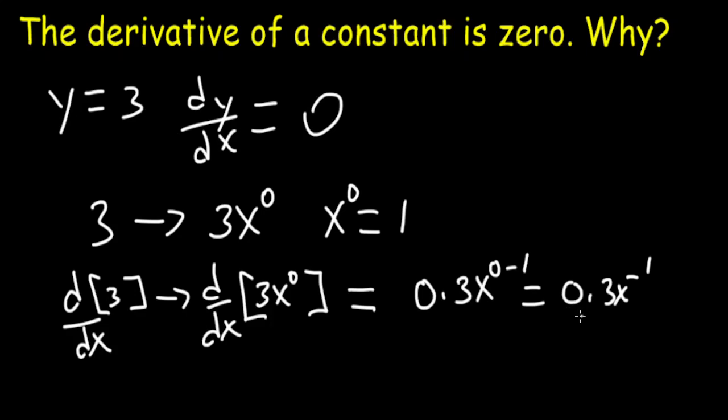Well, anything times 0 is equal to 0. So anytime you have a constant and you take its derivative, it's always equal to 0.